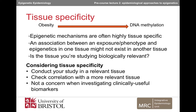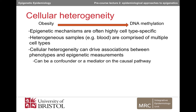Tissue specificity is an important consideration if you're interested in causal mechanisms. However, if you're less concerned with causality and are instead investigating epigenetic measurements as biomarkers of exposures or outcomes, then robust associations in more accessible tissues, such as blood, will be more useful. Epigenetic mechanisms are highly tissue specific because they're highly cell type specific. So this means that in samples such as blood, which are comprised of many different types of cells, the proportion of cell types can influence epigenetic measurements. So in our example, differences in DNA methylation between obese and non-obese individuals might be due to differences in the proportion of different cell types in each group, rather than any true difference in DNA methylation.